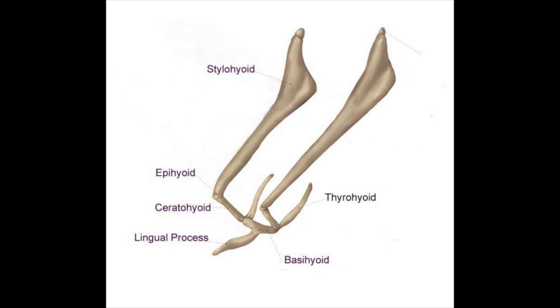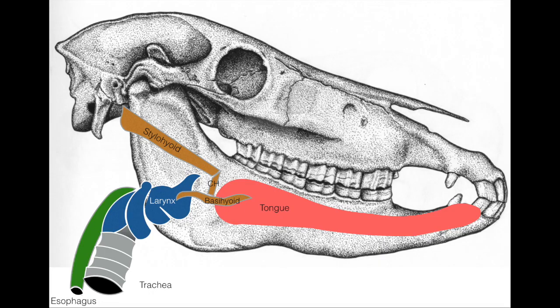The hyoid is comprised of five bones. Two stylohyoid bones, one on either side, are connected to a central basihyoid bone by the two ceratohyoids. The basihyoid has a lingual process that inserts into the base of the tongue. The hyoid is connected by cartilage to the petrous temporal bone and the tympanic bulla.